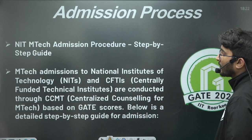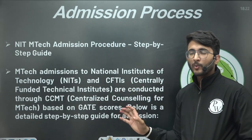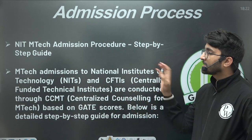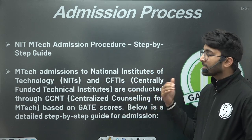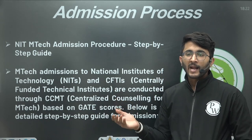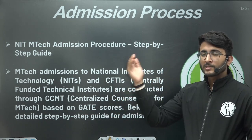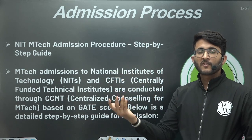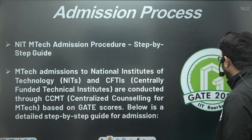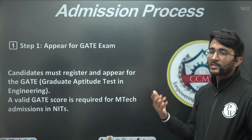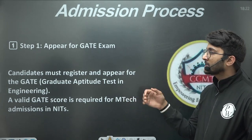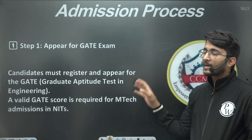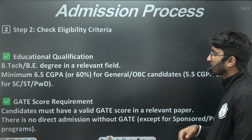For NIT admissions, there is a separate portal called the CCMT portal. After around five to six rounds are completed in the IIT COAP portal, the CCMT portal also launches. In the CCMT portal, you don't need to visit individual NITs — you can directly apply, choose all NITs you are interested in, and give up to 50 preferences. The CCMT portal is also used by institutions like Jamia Islamia, NCUT, DTU, some IIITs, and all NITs.